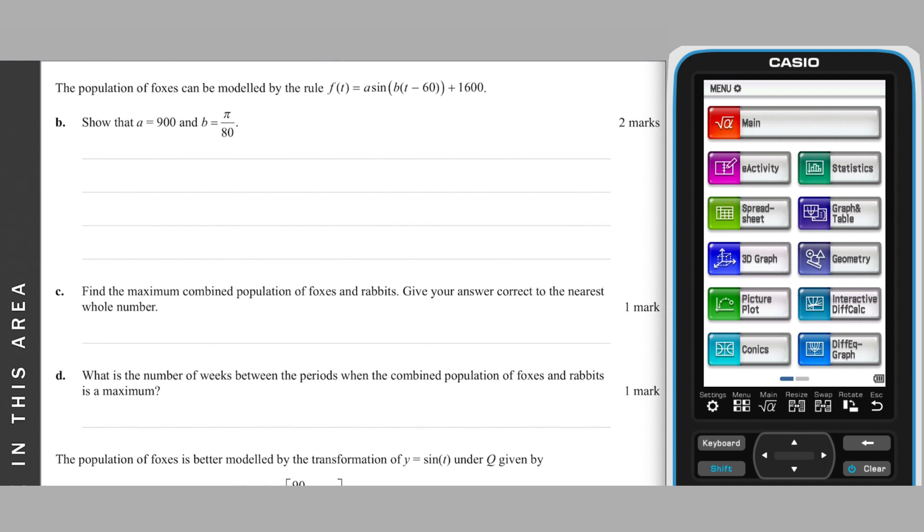Part B: We are asked to show that a equals 900 and b equals π over 80. As a is the amplitude of f, it will be equal to half the vertical distance between maximum and minimum values. Using these values as 2500 and 700 respectively as shown on the graph, we get the a value required.